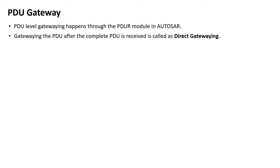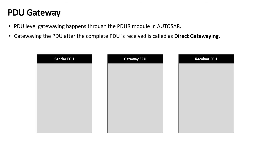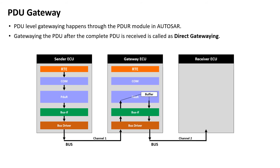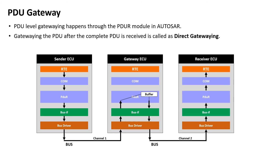Direct gatewaying is very simple. The PDUR module receives the complete PDU and then forwards it. Consider three ECUs: a sender, a gateway, and a receiver ECU. Let's say we want to send 8 bytes of data, which can be sent over a single CAN message. The sender will send the complete message on channel 1, and the gateway ECU will receive it. The PDUR will copy the whole 8 bytes to an internal buffer, then copy this whole message to another CAN message and send it over channel 2, where the receiver ECU receives it. This is called direct gatewaying, where the complete PDU is received before forwarding.